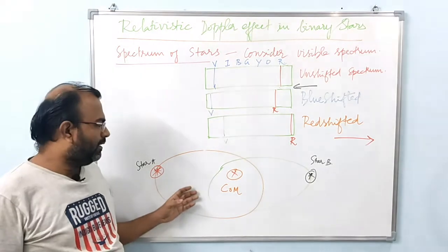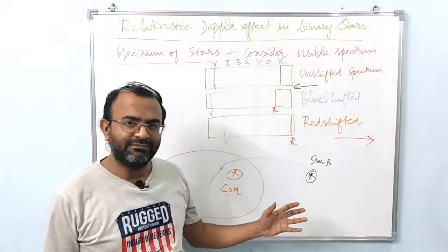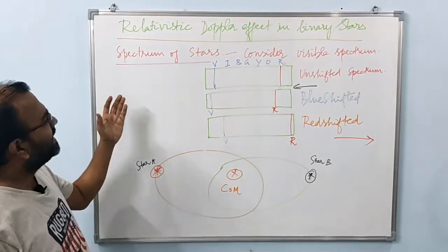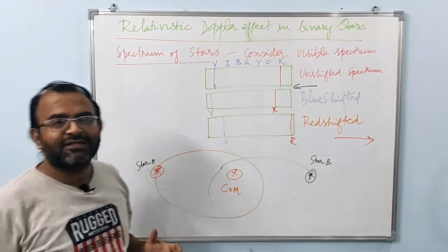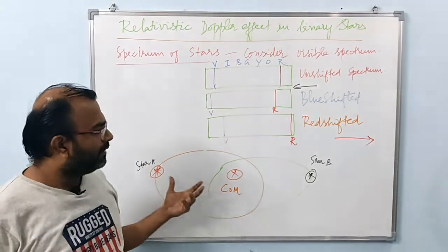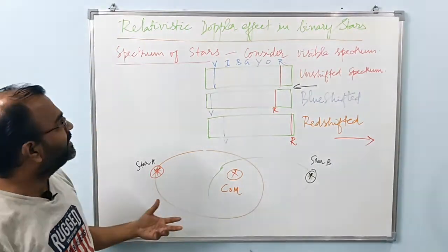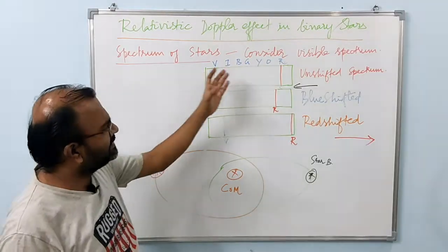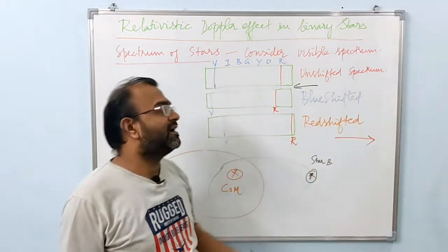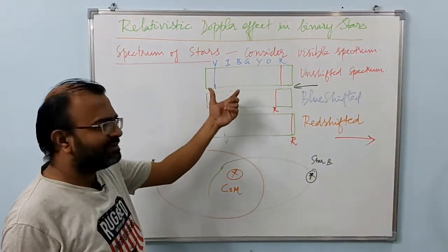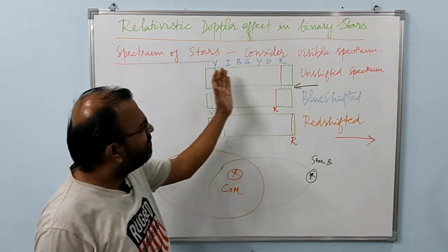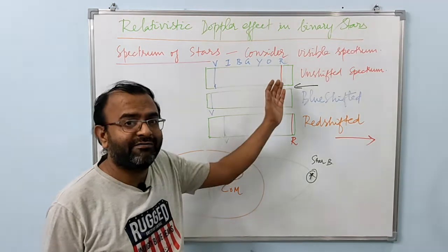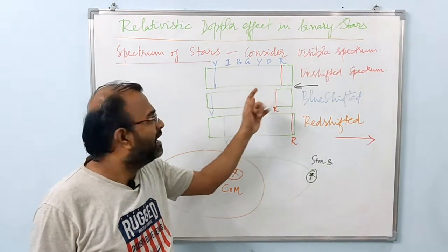How does the Doppler effect help us understand a binary system better? In the case of spectroscopic binaries, it is always the case that the spectrum of the stars has to be analyzed to understand the motion of the stars in the system and their configuration. Let us consider only the visible part of the spectrum. We know that the visible part of the spectrum will have a continuous band of wavelengths that has to be considered.